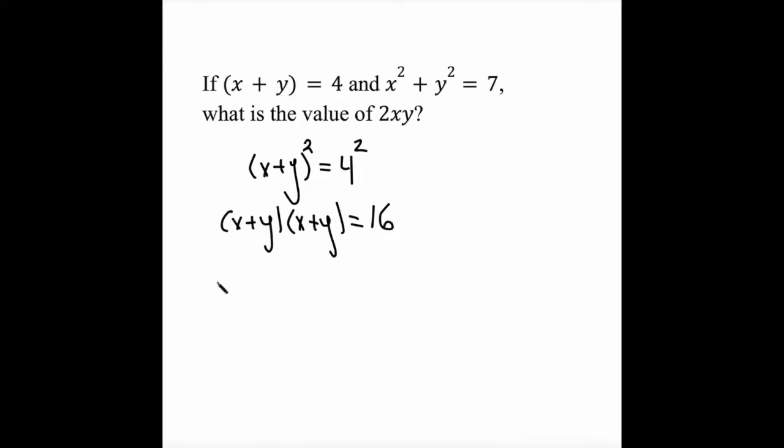So if I FOIL this out, what I get is x squared plus y squared plus 2xy is equal to 16.